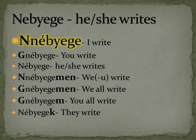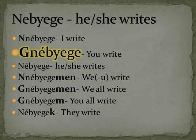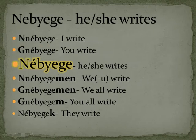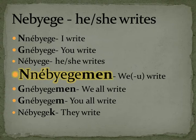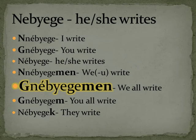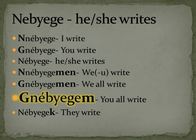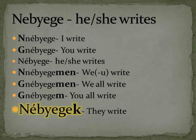Nagebege is the verb to write. In some communities it's jbige instead of nebege. Nagebege — I write. Ganebege — you write. Nebege — he or she writes; you could put a W on there: nebege-wek, or wnebege. Nagebegemen — we but not you write. Nagebegemen — we all write. Nagebegem — you all write. Nabegek — they write.